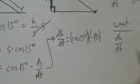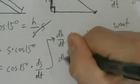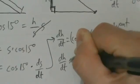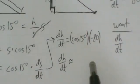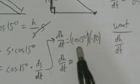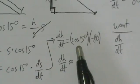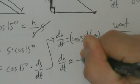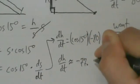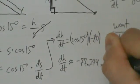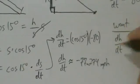So we just toss that into a calculator — make sure it's in degree mode and not radians, because if you're in radians you're going to get something totally different. This is about negative 77.274 miles per hour.